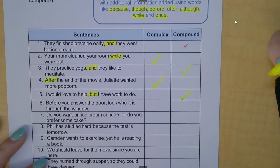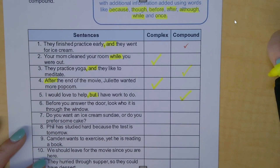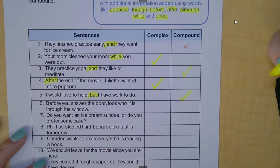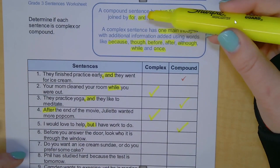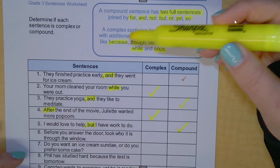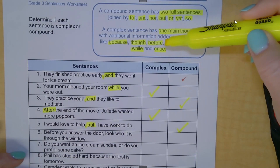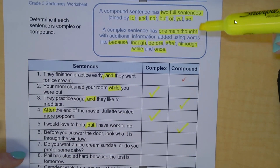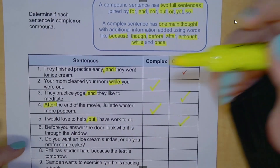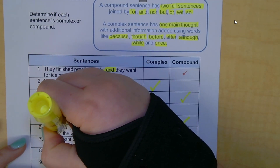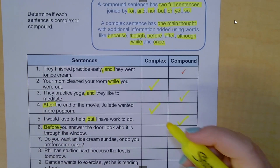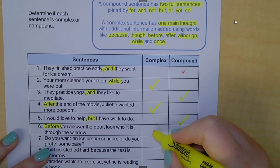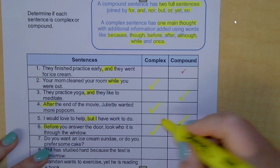Number six: 'Before you answer the door, look who it is through the window.' I don't see a comma and a coordinating conjunction, so it's not compound. I do see 'before.' Before is my clue word, so this is a complex sentence.